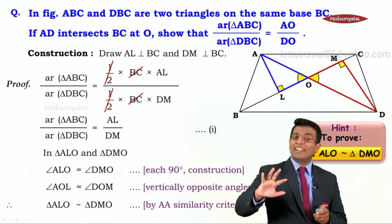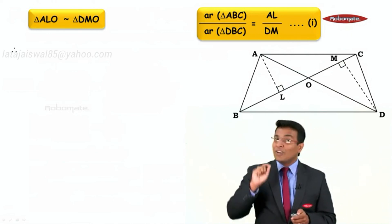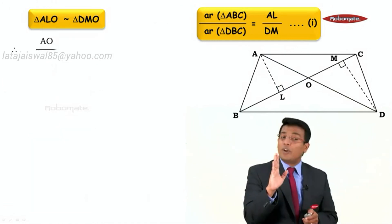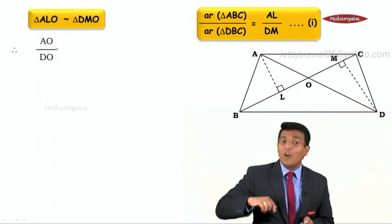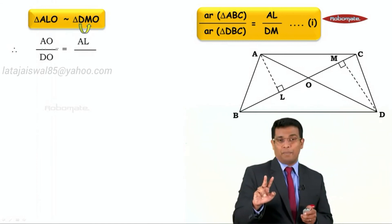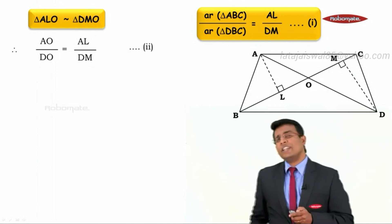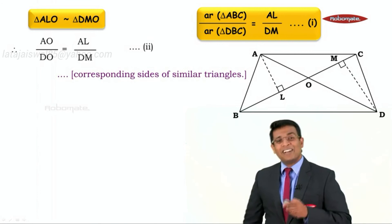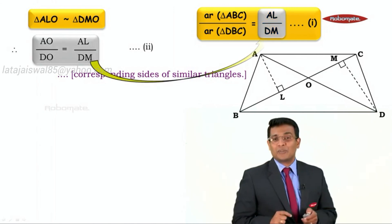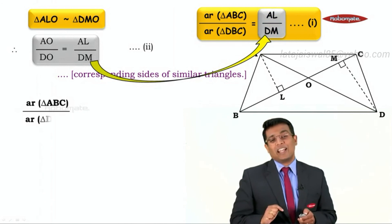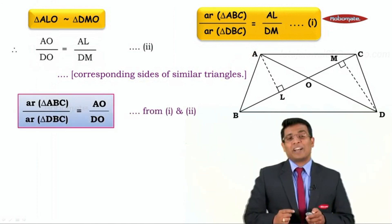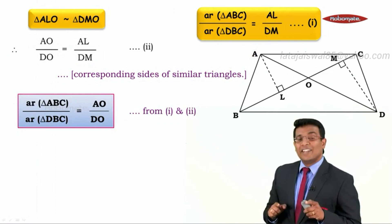Since the triangles are similar, their corresponding sides are proportional. So AO upon DO equals AL upon DM — corresponding sides of similar triangles. Substituting this into Result 1, we get area of triangle ABC upon area of triangle DBC equals AO upon DO. That completes the proof.